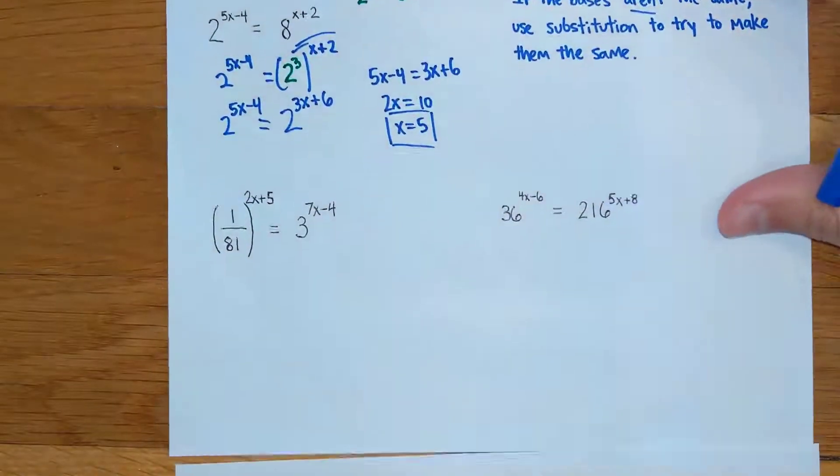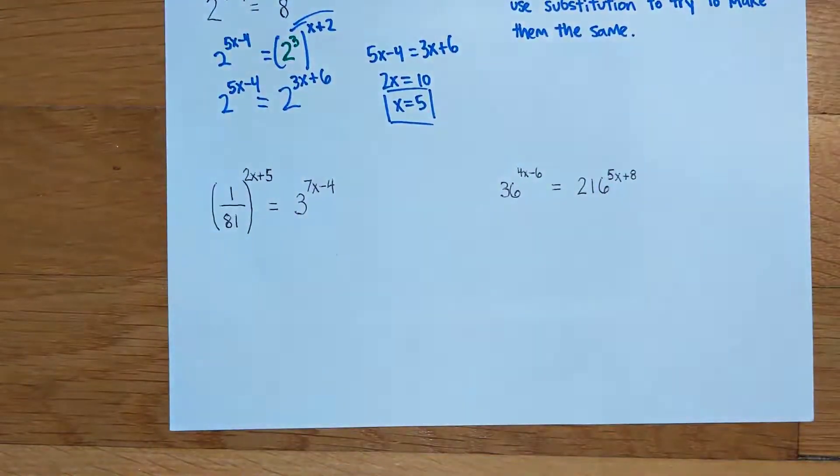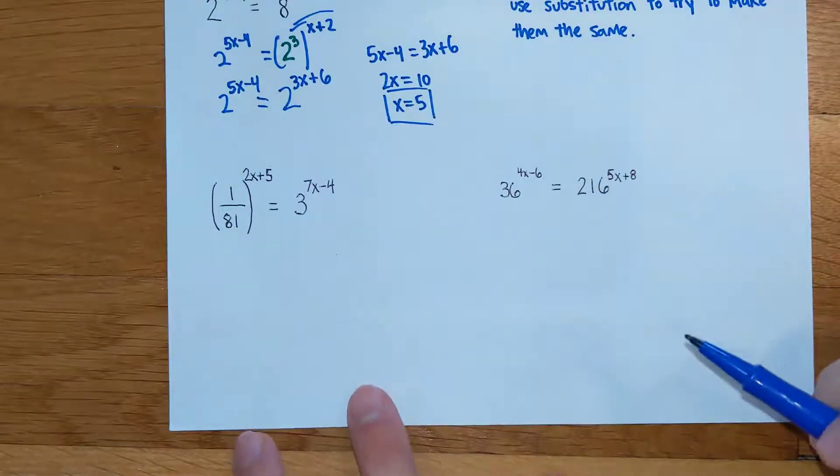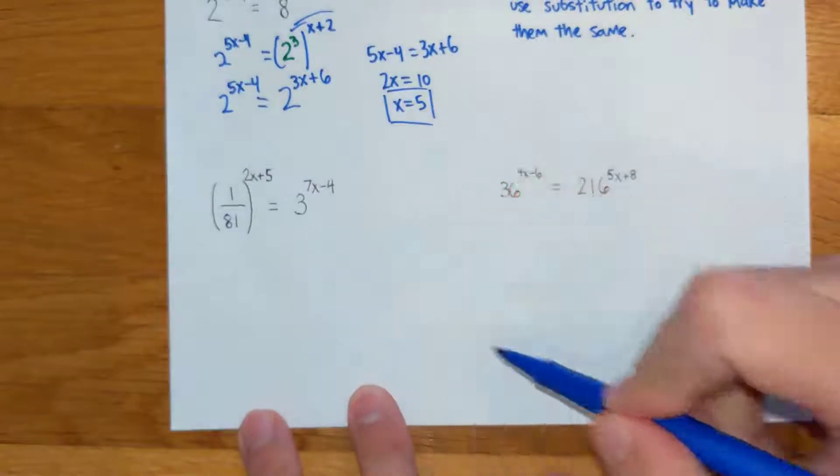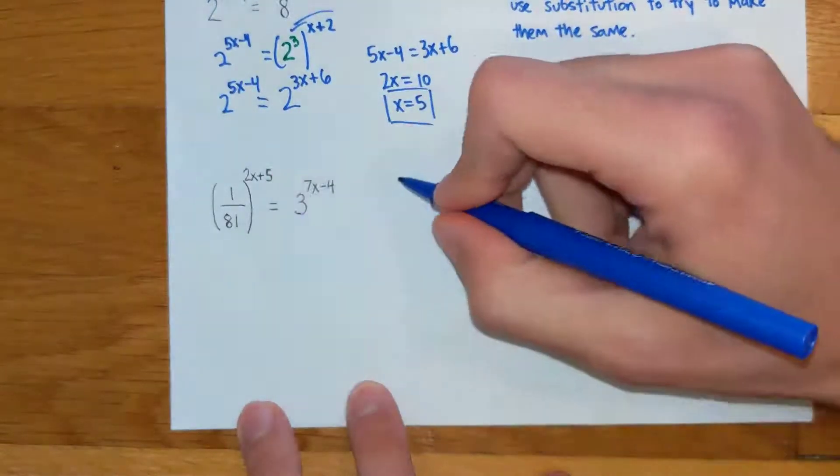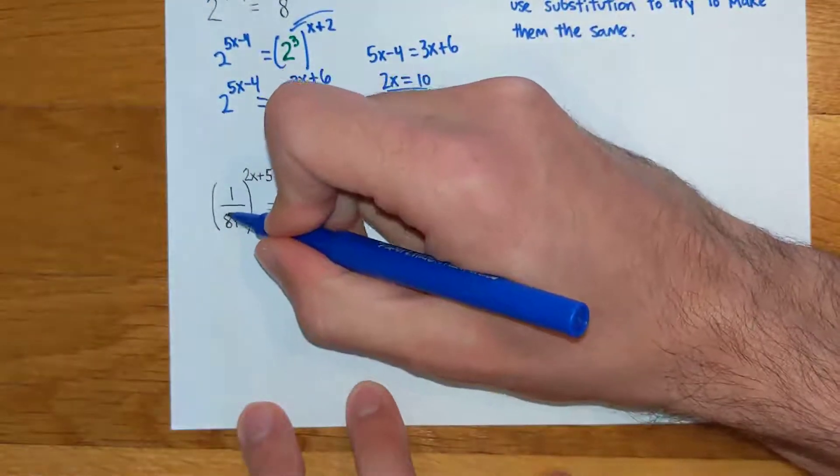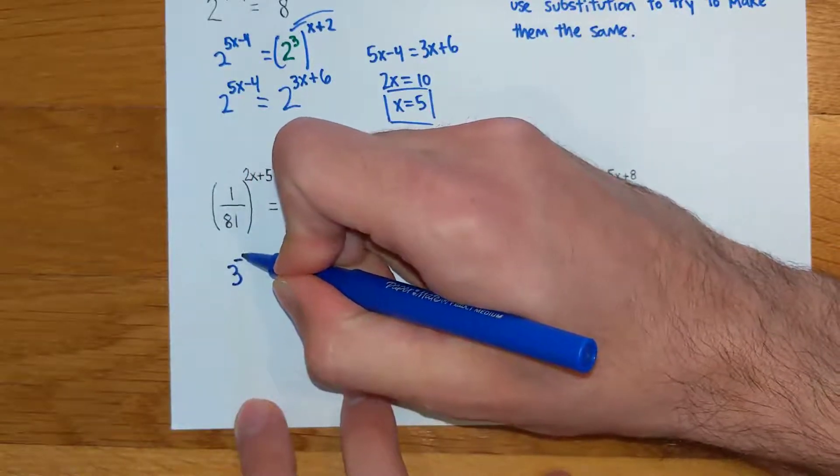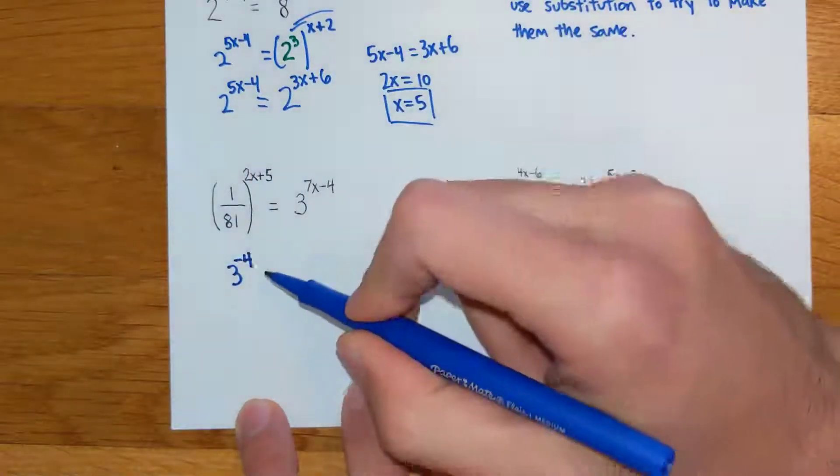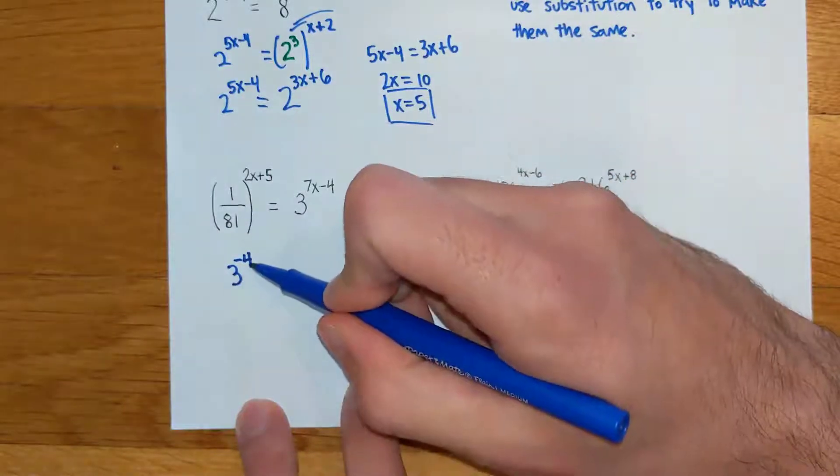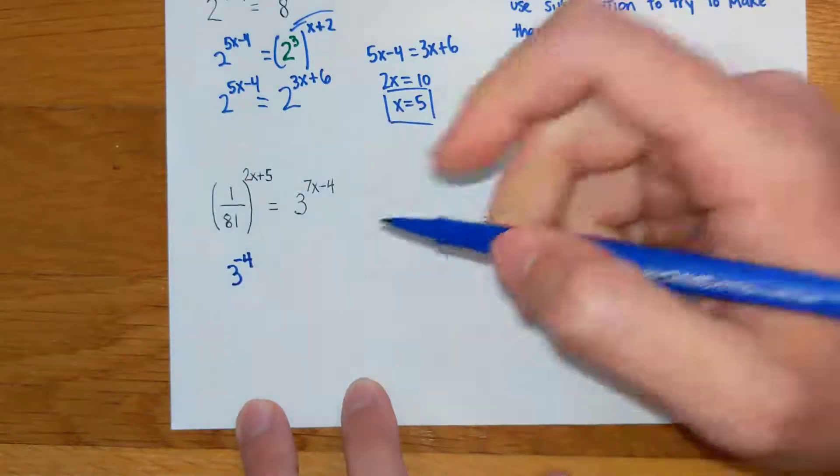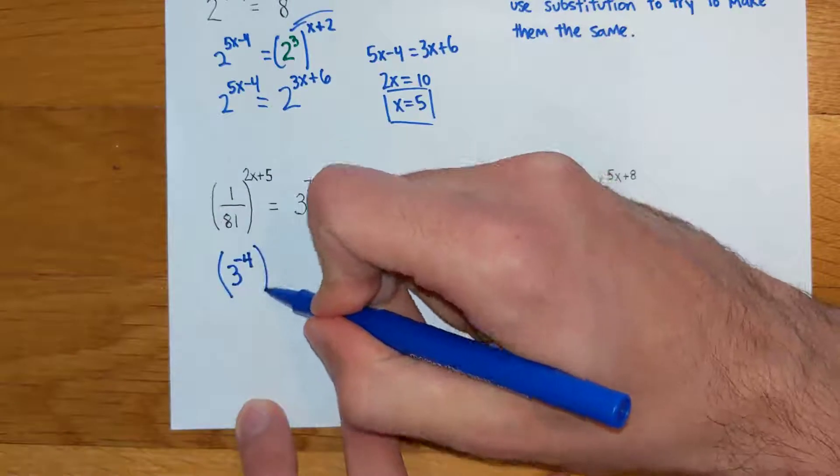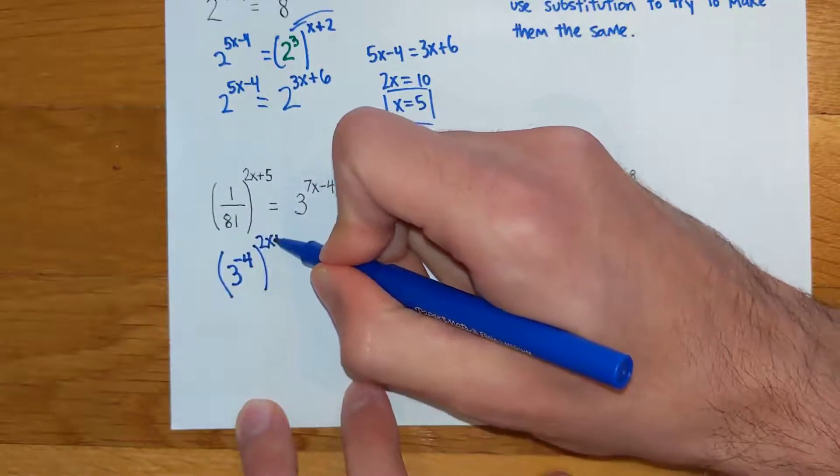We're going to wrap this up with two more example problems right here. On this next one, it takes a little bit of practice to get used to what to substitute where. But this guy right here, 1 over 81, is the same thing as 3 to the negative 4th power. 3 to the 4th is 81, so 3 to the negative 4th makes 1 over 81. Everything else in my problem is going to stay the same for right now.